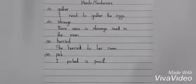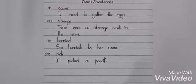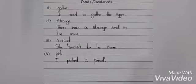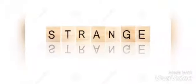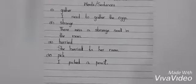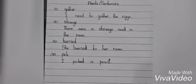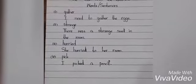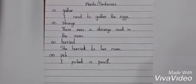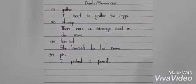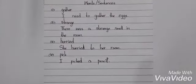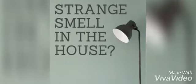The second word is 'strange' — S-T-R-A-N-G-E. The meaning of 'strange' is unusual or unknown. Here we make the sentence: 'There was a strange smell in the room.' You can see here, he feels a strange smell in the room.